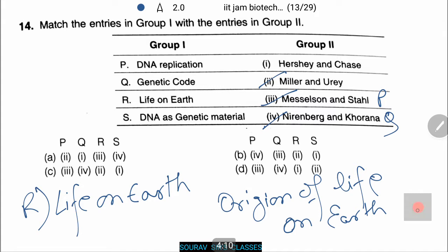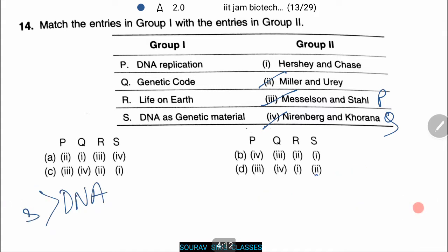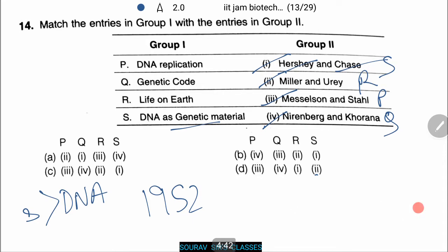Lastly, DNA as genetic material is a famous one. It was put forward by Hershey and Chase in 1952. The proof that DNA is the genetic material came from experiments by Alfred Hershey and Martha Chase. Combining all four answers, the final answer is C.